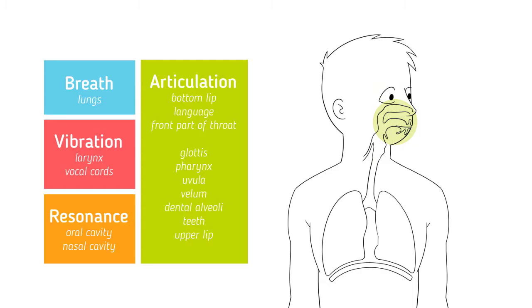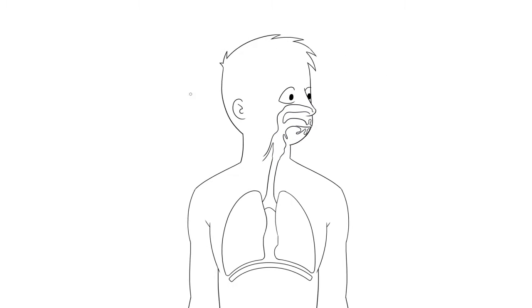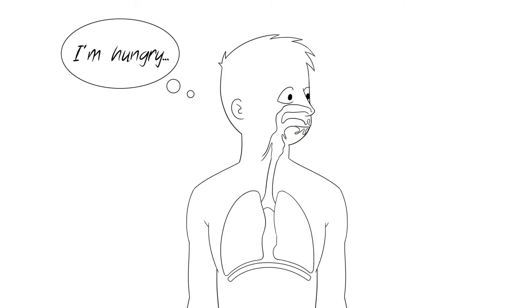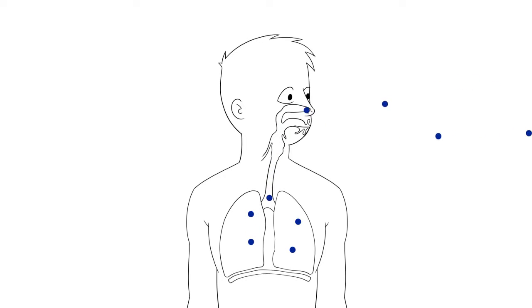We need air to talk, sing, or make any kind of sound. Air is stored in the lungs, which are filled as the diaphragm contracts downward. The air is then expelled from the lungs, travels up the trachea, and reaches the laryngeal vibrator.